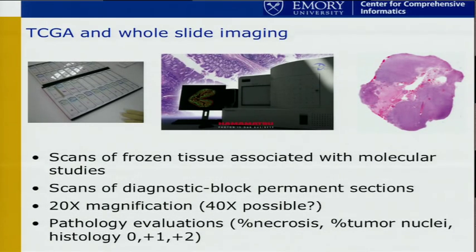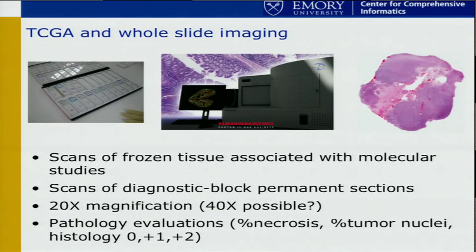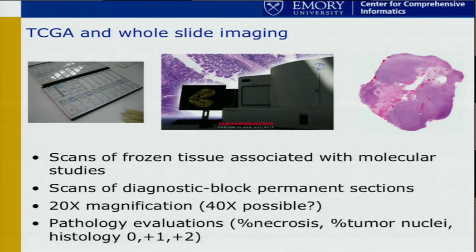One of the other things we have besides these images are teams of pathologists who look at them and rate criteria. The basic things are percent tumor nuclei and percent necrosis. But in GBMs, they also rated a lot of histological criteria: presence of gemistocytes, whether there's an oligo component, lymphocytic infiltration, and quite a few other categories.